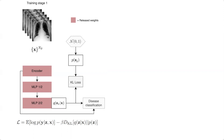To this end, we propose a conditional latent variable model based on the variational autoencoder. The model consists of two steps. In the first step, we train our model on our entire dataset, where the variational posterior is directly defined by the image, while the variational prior is conditioned on a normal Gaussian distribution.